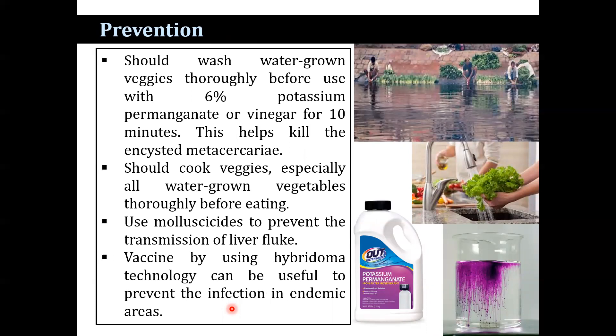For prevention, one should wash water-grown vegetables thoroughly, using 6% potassium permanganate or vinegar for ten minutes before use. This helps to prevent transmission of liver fluke infection. Additionally, vaccines developed using hybridoma technology can be useful to prevent infection in endemic areas.